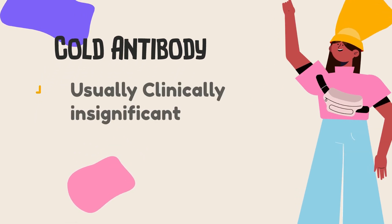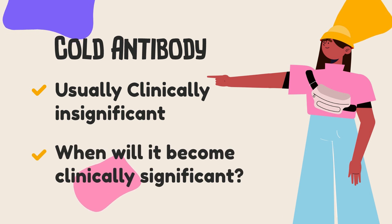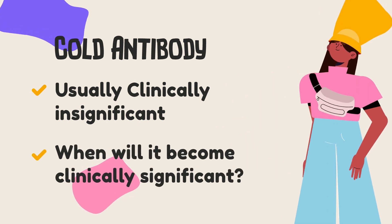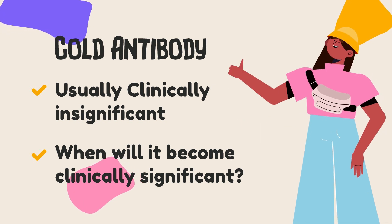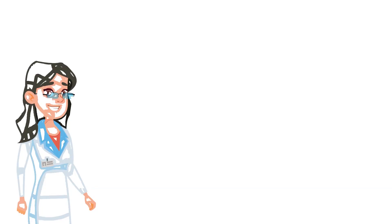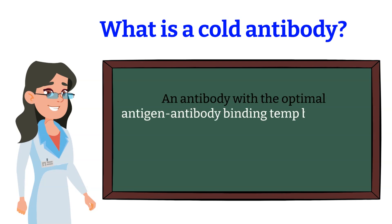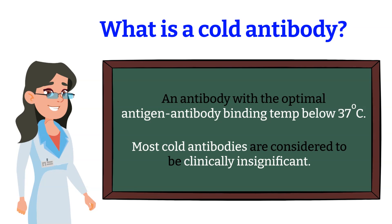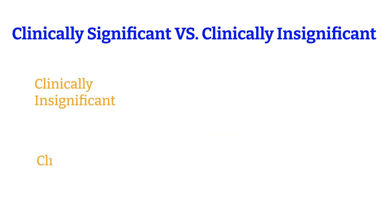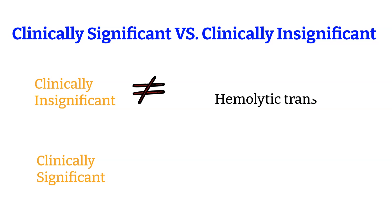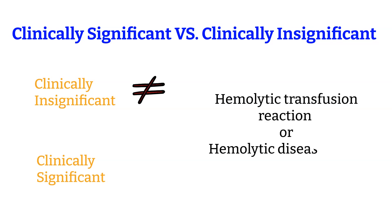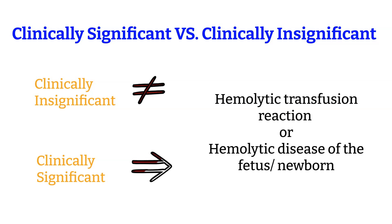In general, we think of cold antibodies as clinically insignificant. However, there are times when they become clinically significant. What is a cold antibody? A cold antibody is a red cell antibody with the optimal antigen-antibody binding temperature below 37 degrees Celsius. Most common cold antibodies are considered clinically insignificant because the reaction happens below body temperature. A clinically insignificant antibody does not cause hemolytic transfusion reactions or hemolytic disease of the fetus and newborn.